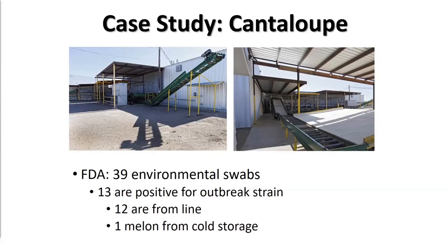When FDA went in, they found that 13 of the environmental samples taken were positive for the Listeria strain implicated in the outbreak. They found it all over the packing line as well as in the cold storage area. This is just a picture of that particular facility — a very egregious post-harvest contamination issue.